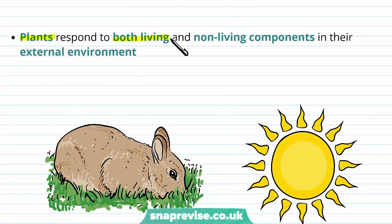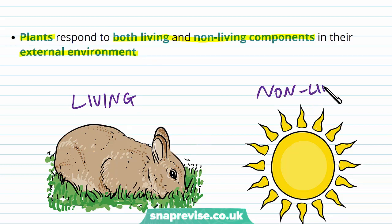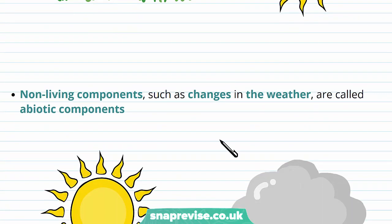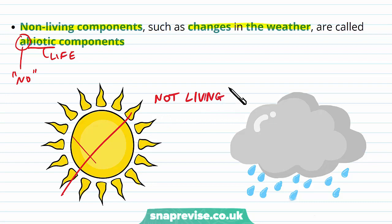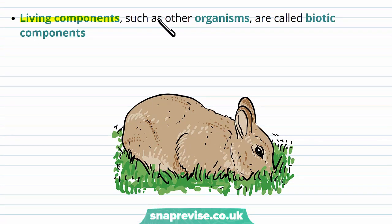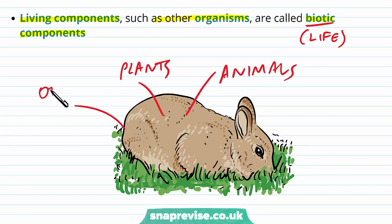Plants have to respond to both living and non-living components in their external environment. Living components could be other plants or animals. Non-living components are collected under the term abiotic — for example sunlight, humidity, pH of the soil, or changes in the weather. Biotic refers to life, so abiotic means without life or not living. The living components, such as other organisms around them, are known as biotic components — for example animals, plants, or pathogens.